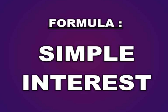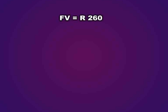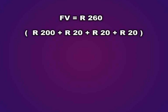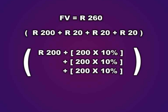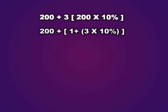Let us use that concept to derive a standard formula for simple interest calculations. Future value, which we know is 260 Rand, equals 200 Rand (our present value) plus 20 Rand (interest for year 1) plus 20 Rand (year 2) plus 20 Rand (year 3). That equals 200 plus 200 times 10% plus 200 times 10% plus 200 times 10%, which is 200 plus 3 times 200 times 10%, giving us present value times (1 plus 3 times 10%).